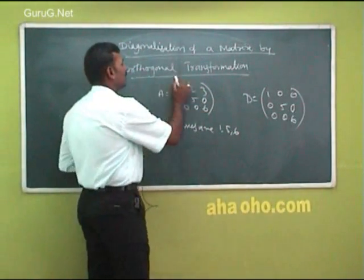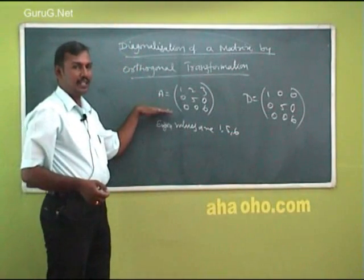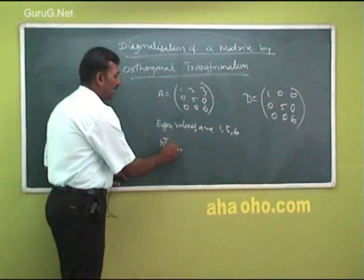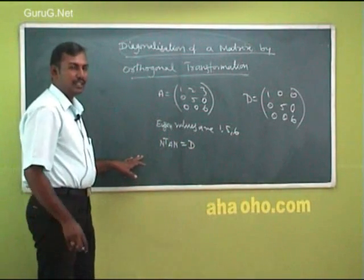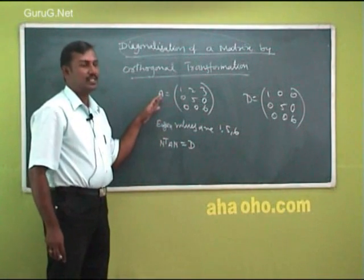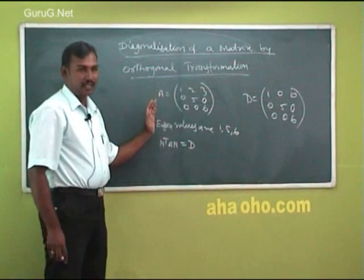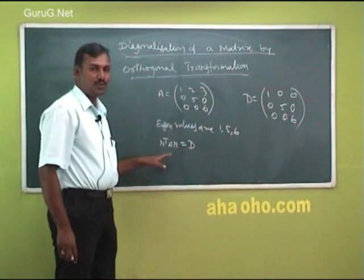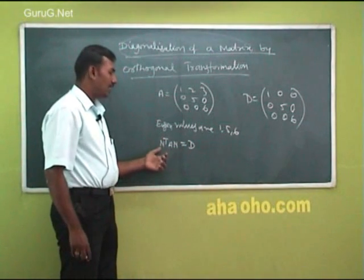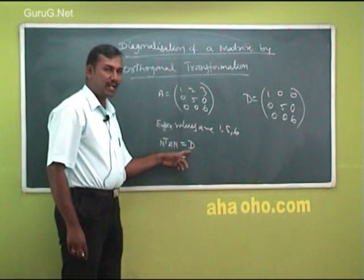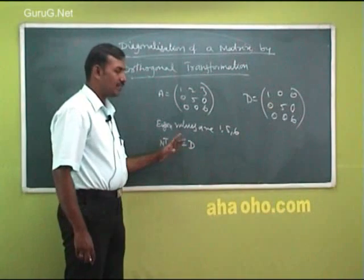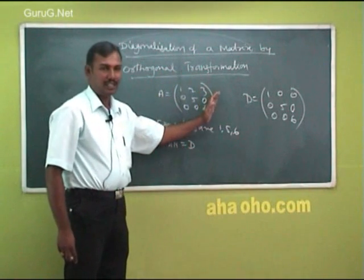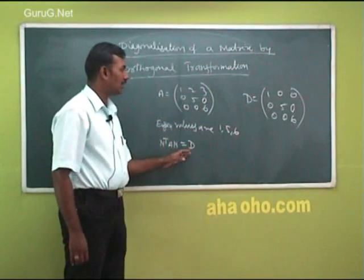Next, the orthogonal transformation. The same procedure — transforming A into diagonal matrix by means of the transformation N transpose AN equal to D. Then it is called diagonalization of a matrix by orthogonal transformation. Transforming A into diagonal matrix by means of the transformation N transpose AN equal to D, where N is the normalized modal matrix and D is the diagonal matrix whose diagonal elements are the eigenvalues of a given matrix. If you do one problem, then you can understand it.